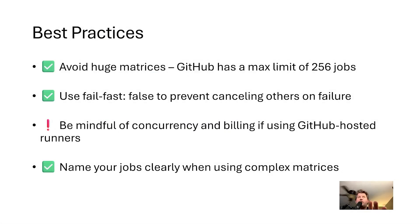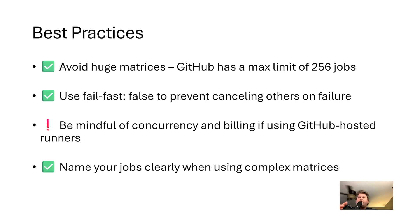Before we wrap up, here are a few best practices and gotchas. Avoid huge matrices — GitHub has a max limit of 256 jobs. Use the fail-fast keyword set to false to prevent canceling other jobs if a particular job fails. Be mindful of billing, especially with GitHub hosted runners, since spawning multiple jobs on multiple runners can run up a bill quickly. Finally, name your jobs clearly when using a more complex matrix so it's obvious what each job is doing.